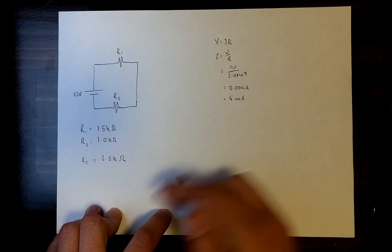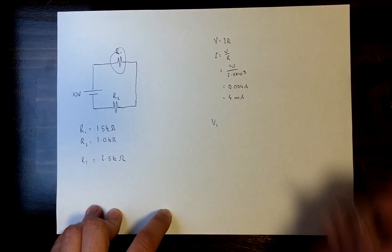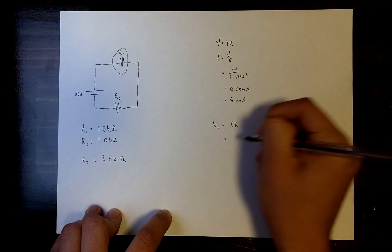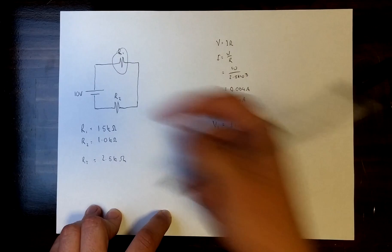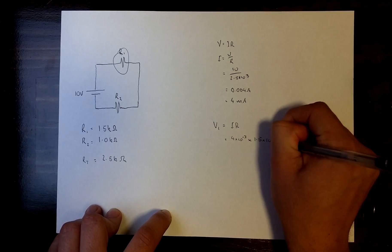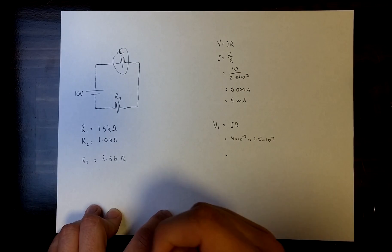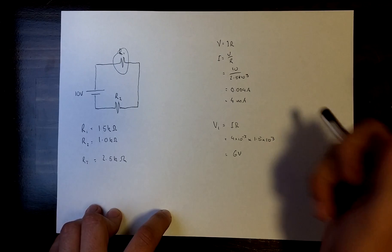We know our current is 4 milliamps. We know our resistance, say if we want to find V1, the voltage across this resistor here. So V1 is equal to IR, which is equal to 4 times 10 to the minus 3, that's our 4 milliamps that goes through this whole circuit, times 1.5 times 10 to the 3, which is this resistance here. So that comes out to equal 6 volts.